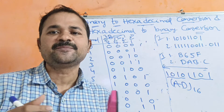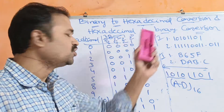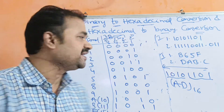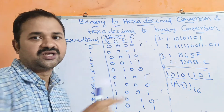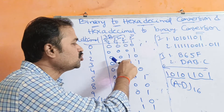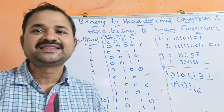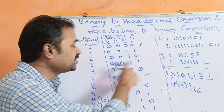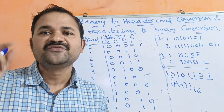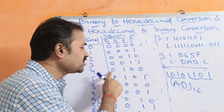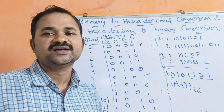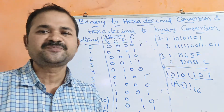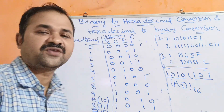First let us see how to represent 0 in binary: 0 means no need of 8, 4, 2, 1, so we write all 0s. For 1, we write 1 in the 1 position, remaining positions 0. For 2, we write 1 in the 2 position, remaining positions 0. For 3, which is the sum of 2 and 1, we write 1 in the 2 position and 1 position, remaining 0. For 4, we write 1 in the 4 position, remaining 0. For 5, the sum of 4 and 1, we write 1 in the 4 position and 1 position. Due to space constraints, I am representing only a few numbers.